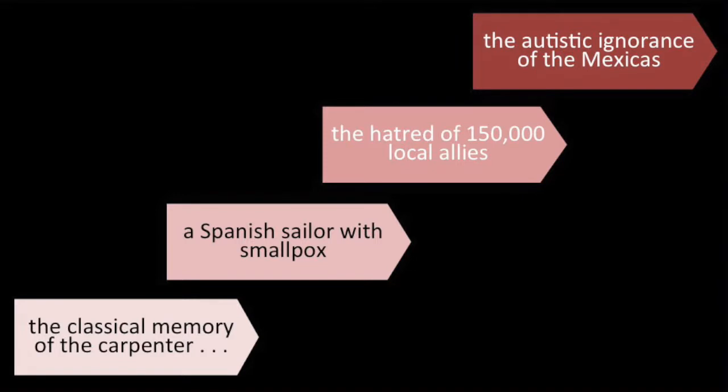In reality, Cortés conquered Mexico in the 16th century because his quantum malice played with four aces. The classical memory of the carpenter that reconstructed the brigantines by which the Spanish arquebusiers controlled the lake that surrounded Tenochtitlan and the supplies to their city. A Spanish sailor with smallpox, the European scourge that took away the strength of the defenders of Tenochtitlan.